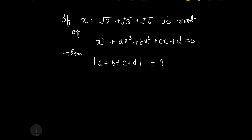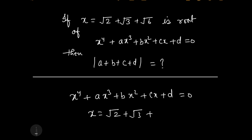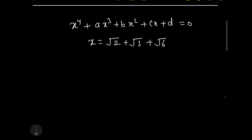Now let us start to solve this question. We have the equation x to the power 4 plus ax cubed plus bx squared plus cx plus d equals 0, and the root is x equals square root 2 plus square root 3 plus square root 6. We have to find the modulus of a plus b plus c plus d. If we try to solve it by directly substituting the value of x, it will be a very lengthy process, so we will use another method.